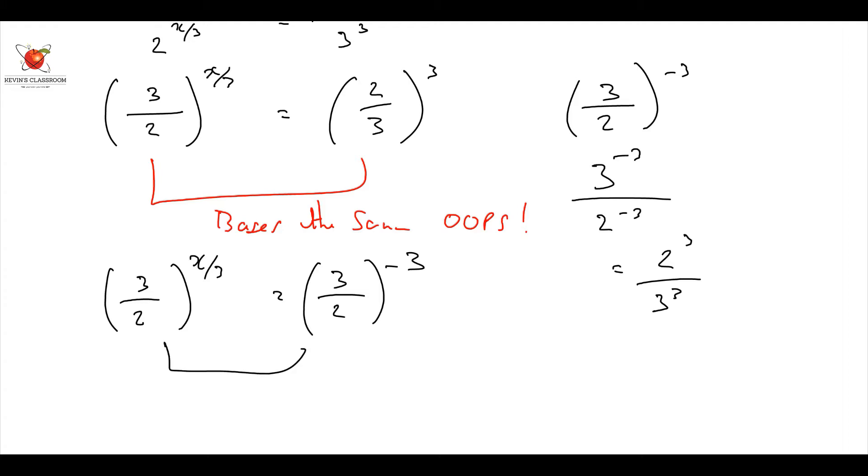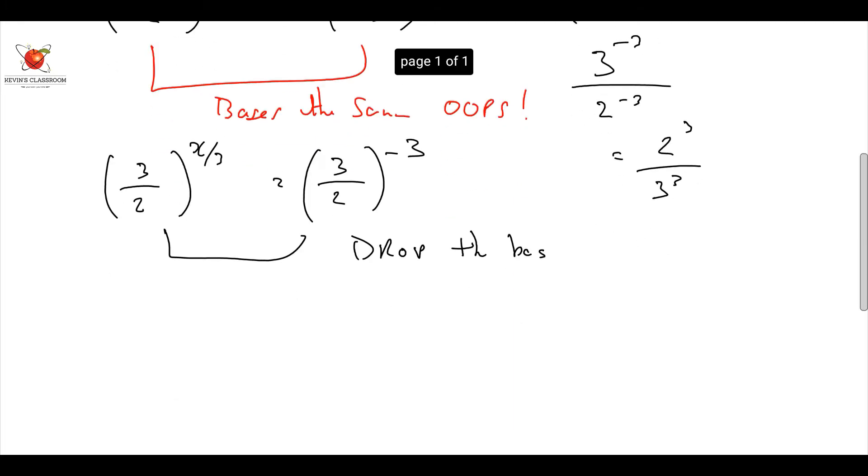Now I can say drop the base. Drop the base. And what am I left with? x over 3 is equal to minus 3 therefore x is equal to minus 9. And we are sorted.